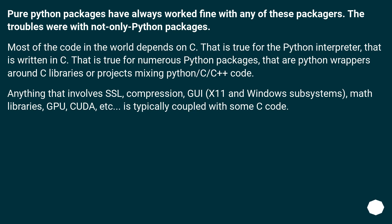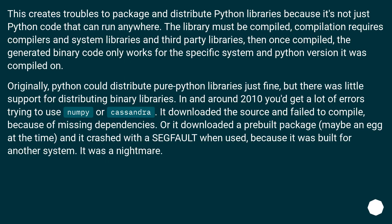Anything that involves SSL, compression, GUI, X11 and Windows subsystems, math libraries, GPU, CUDA, etc. is typically coupled with some C code. This creates trouble packaging and distributing Python libraries because it's not just Python code that can run anywhere — the library must be compiled, compilation requires compilers and system libraries and third-party libraries, and then once compiled, the generated binary code only works for the specific system and Python version it was compiled on.